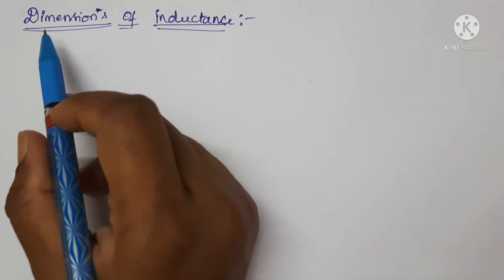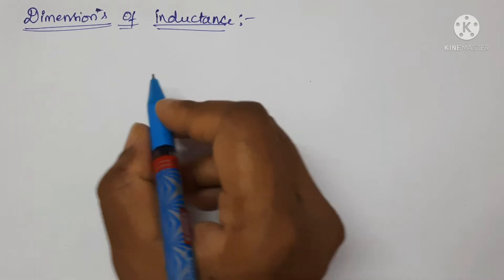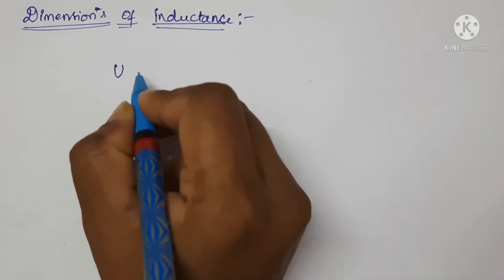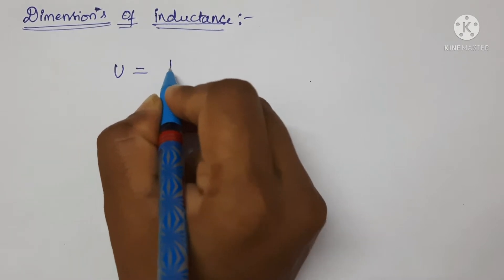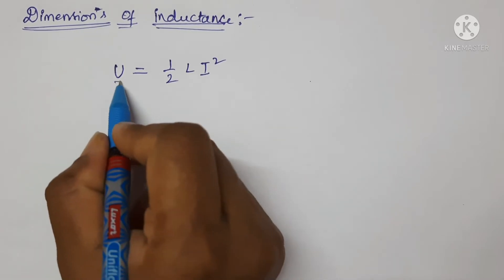Hi friends, in this video we are going to find the dimensions of inductance. For that, let us consider the formula for energy stored in an inductor, which is U equals half L I squared. Here U is the energy stored in an inductor, L is the inductance, and I is the current.